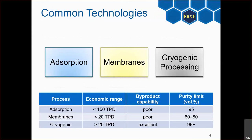The separation mechanisms correlate with technologies: adsorption, membranes, and cryogenic processing. A comparison table shows economic range, byproduct capability, and purity limits. Adsorption and membranes have upper economic limits because their capital cost is basically a linear function of capacity — you don't get a decrease in cost per unit capacity. For cryogenic processing, there is a decrease in unit cost per capacity, which is why the largest plants are cryogenic ones.